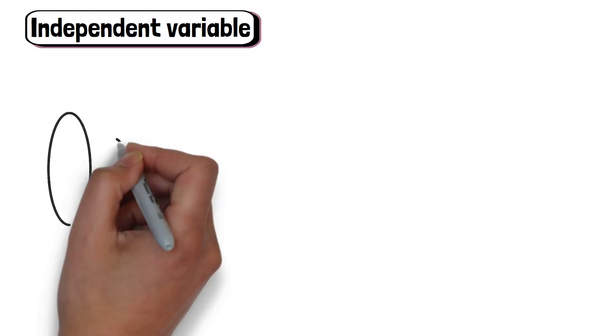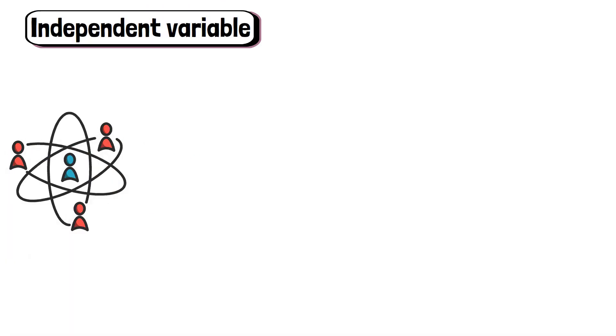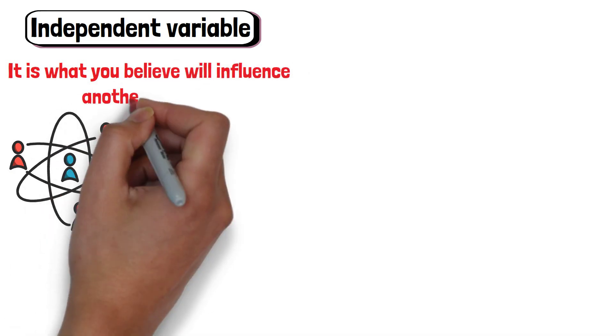An independent variable is the factor that you change or control in an experiment. It is what you believe will influence another variable.